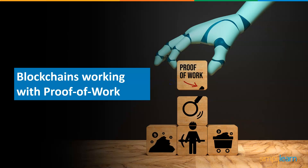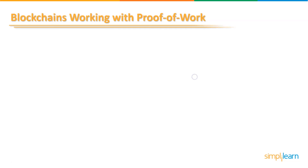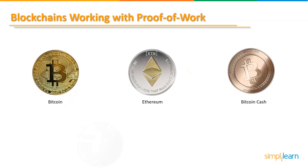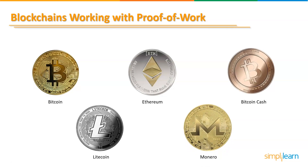Let's explore the best blockchain networks working with proof of work. Bitcoin is the largest and first blockchain to adopt proof of work. Ethereum is next, though it is aiming to switch to proof of stake. Bitcoin Cash is an extension of Bitcoin and follows the same structure, so it also works on proof of work. Litecoin is also an altcoin of Bitcoin, and Monero is another cryptocurrency serving a similar purpose.